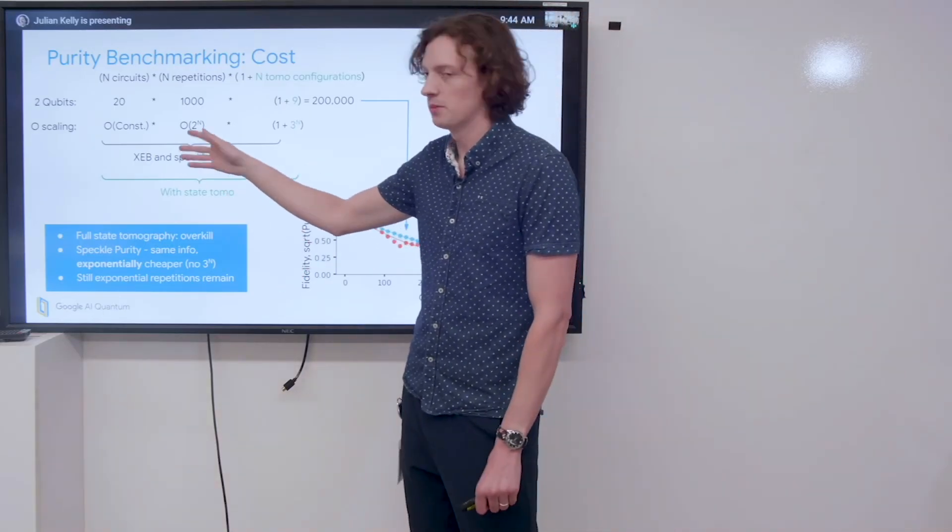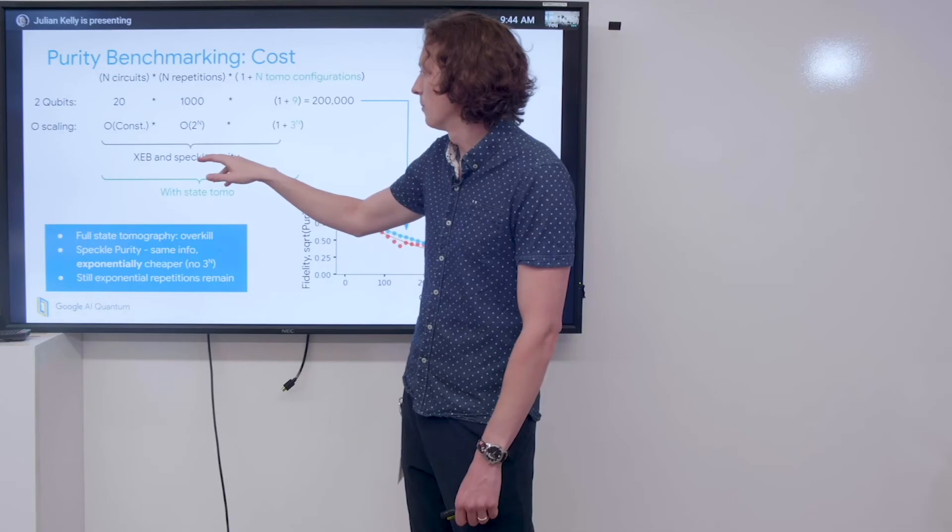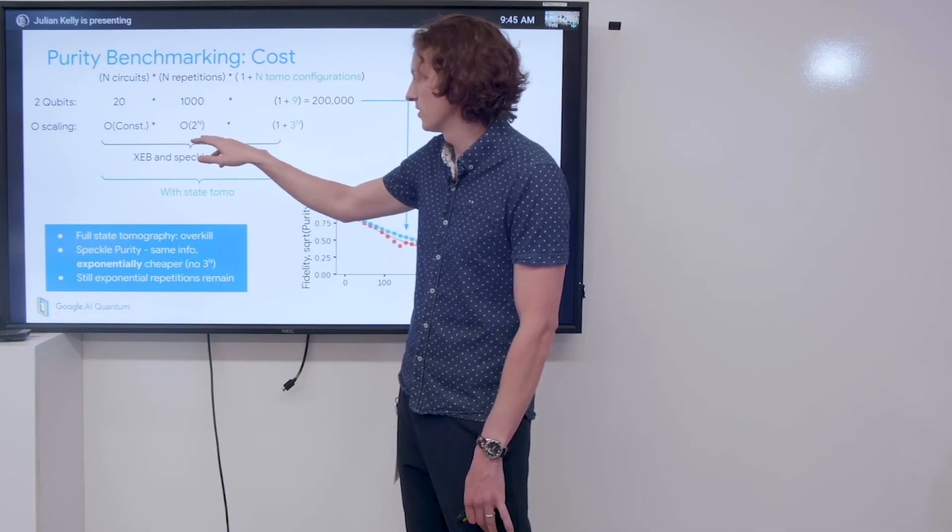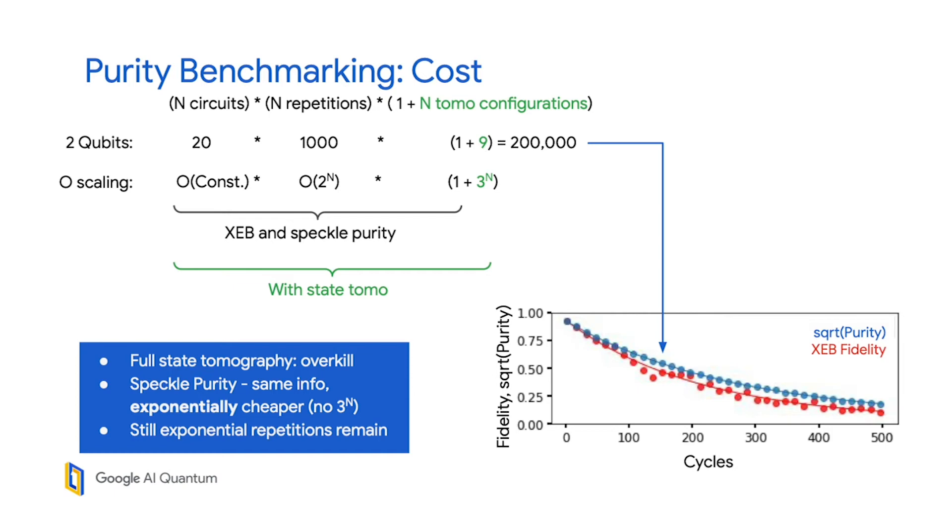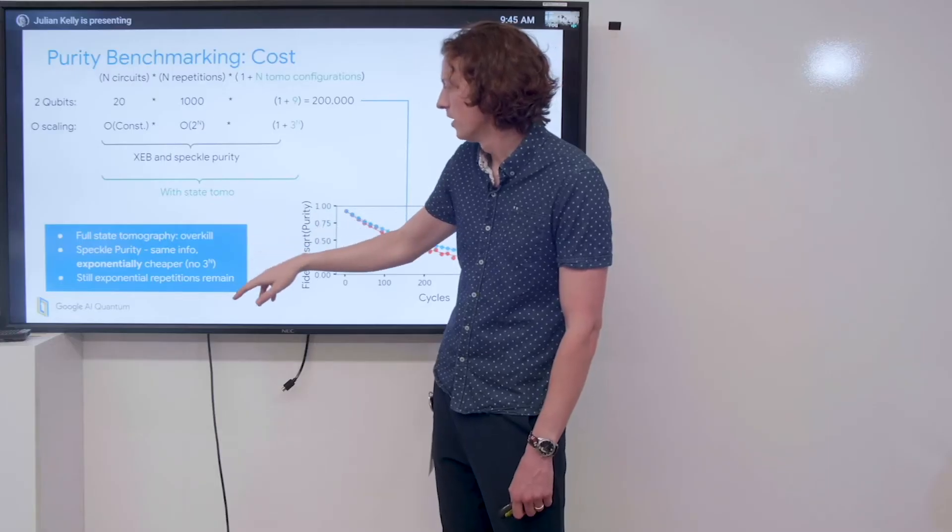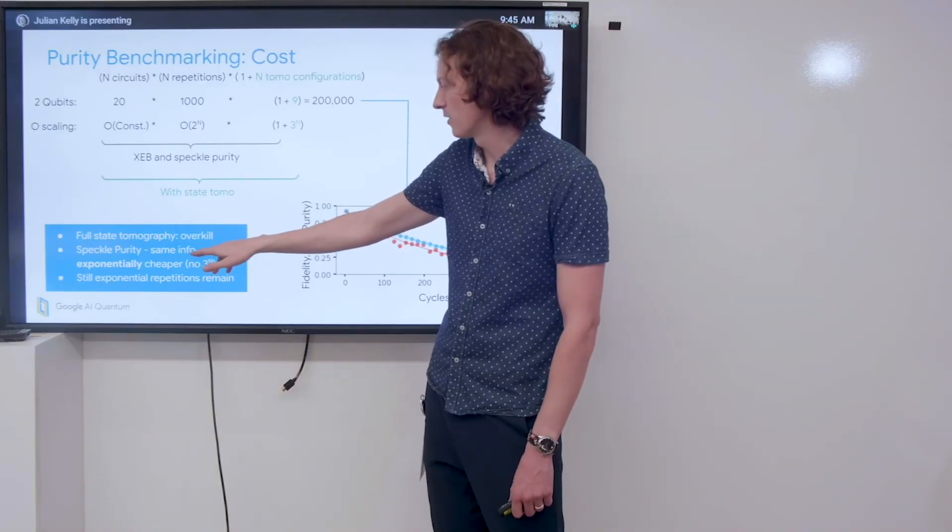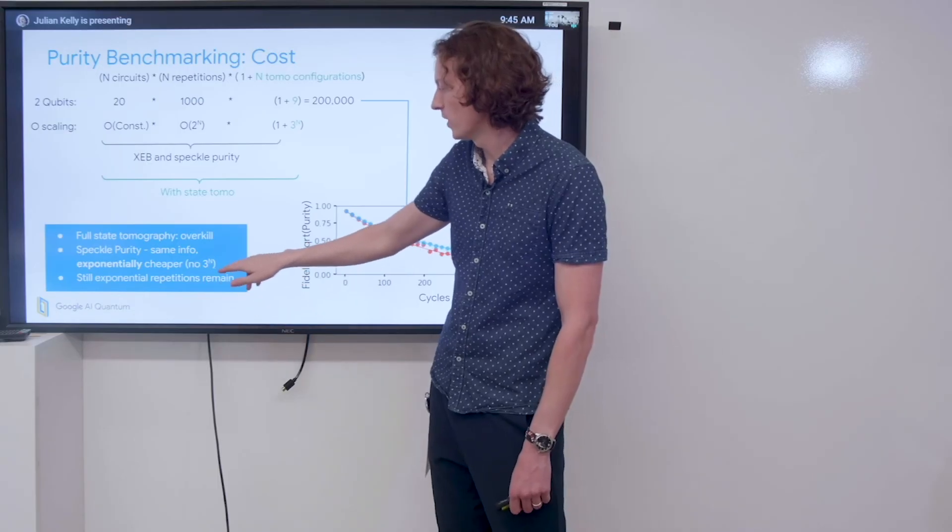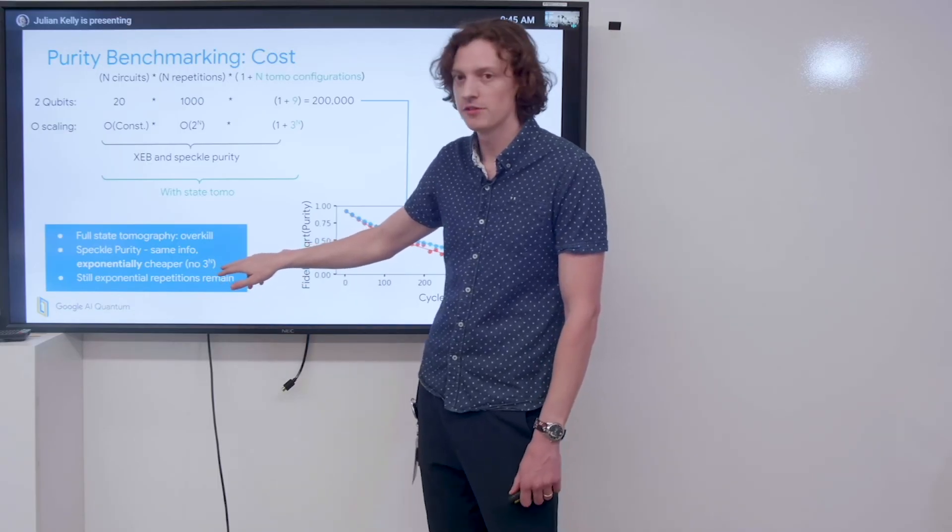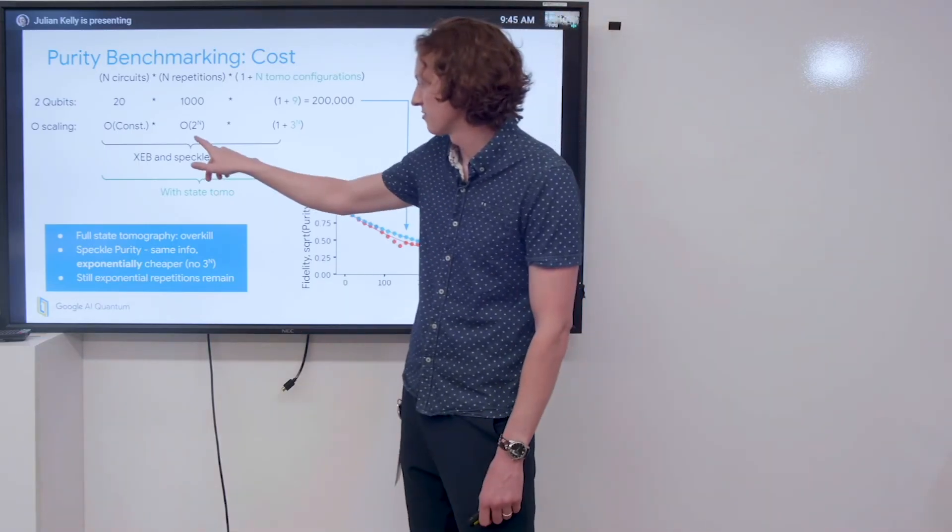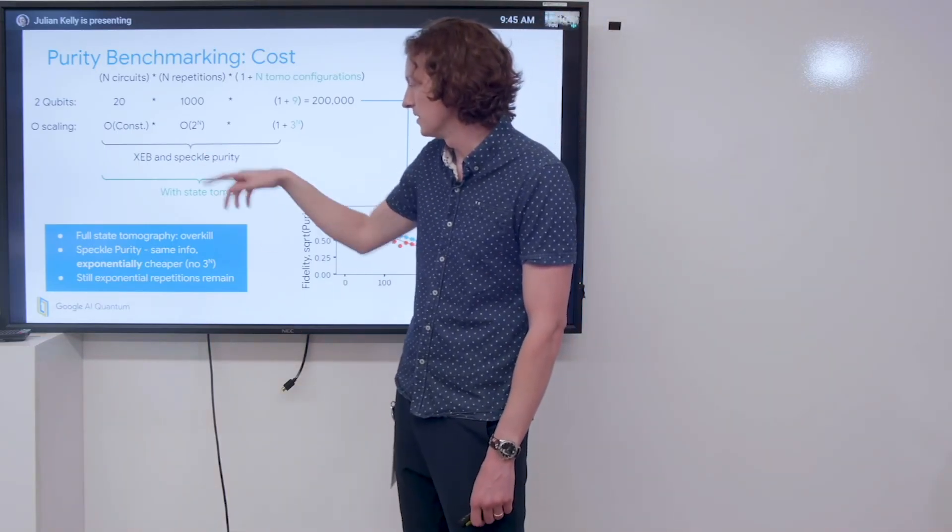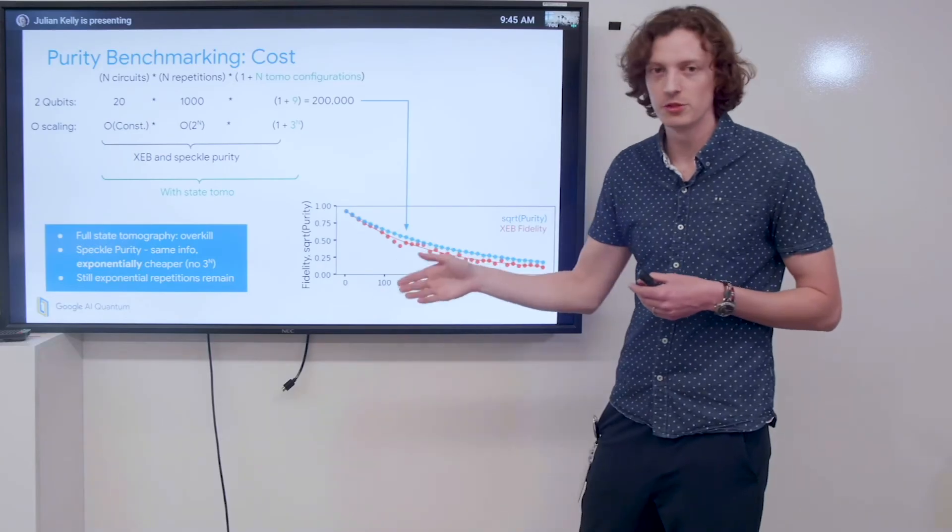If you look at the order scaling, the number of circuits in XEB we typically pick to be about constant. The number of repetitions, it turns out, scales exponentially due to the size of the Hilbert space. But then we also have this additional exponential factor doing full state tomography. What we're taking away from this is that full state tomography really is overkill for extracting the purity. We can get it just from the speckles with the same information, only we're doing it exponentially cheaper—we're actually getting rid of this 3 to the n factor.